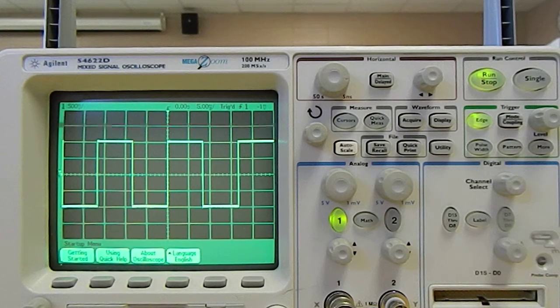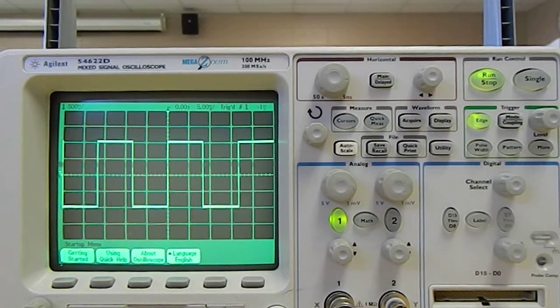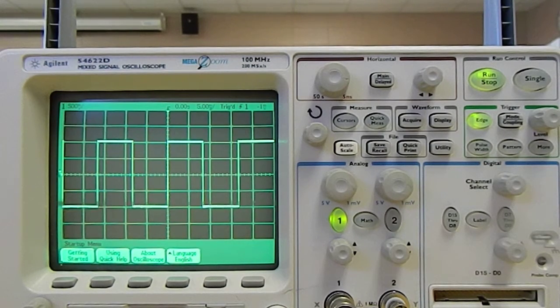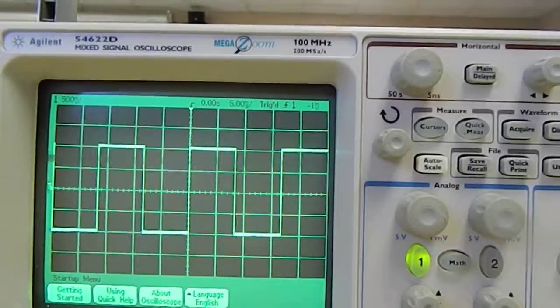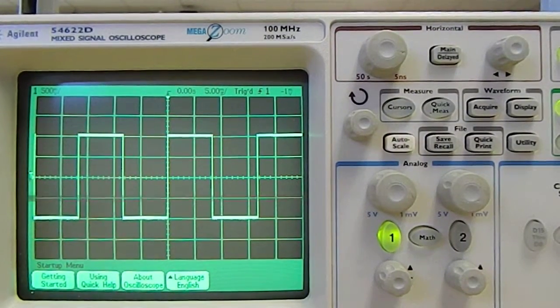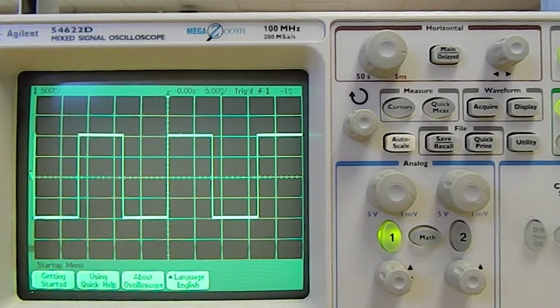All right, so first of all, why do we want to use cursors? Well, they help us to measure things, and so for example, if we want to measure the period of a signal, that might be a good thing, or the amplitude, we can do this.